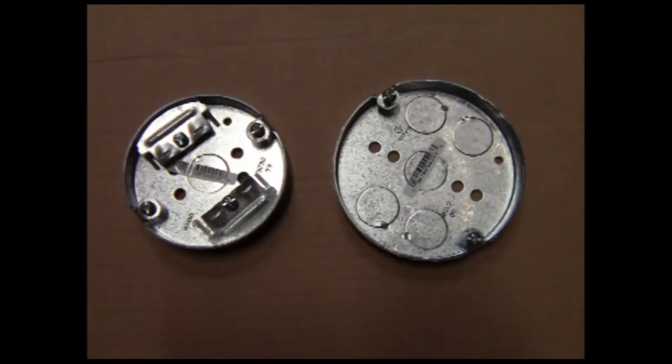What we have here are called pancakes. We have a 3.0 and 4.0 shown and these are used to mount directly to a beam when location is critical and a beam prevents the use of a standard light box.